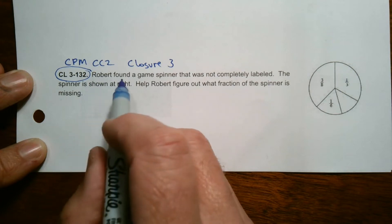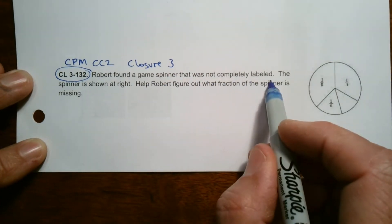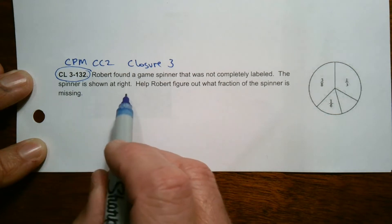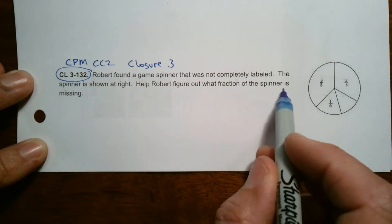So it says, Robert found a game spinner that was not completely labeled. The spinner is shown at the right. Help Robert figure out what fraction of the spinner is missing.